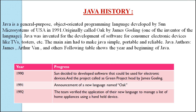The following table shows the years and beginnings of Java. In 1990, Sun decided to develop software that could be used for electronic devices, and the project was called the Green Project, headed by James Gosling. Sun Microsystems developed software with the main theme that would become Java.